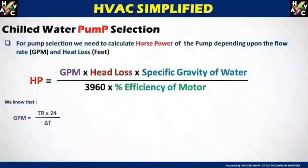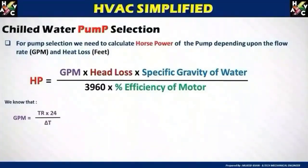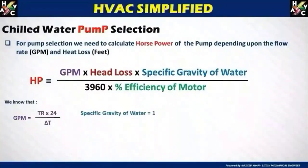GPM is equal to TR × 24 divided by delta T. I have made a separate video explaining the GPM calculation in detail, which will be linked in the description. You can refer to it to understand how to calculate GPM.